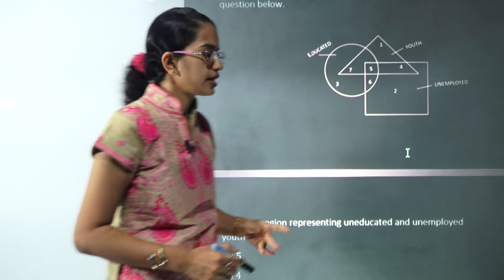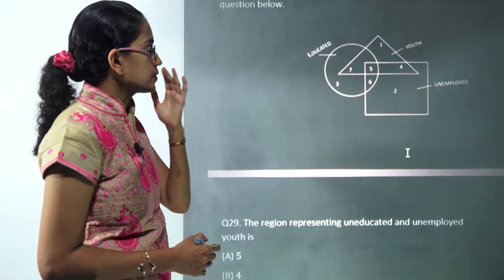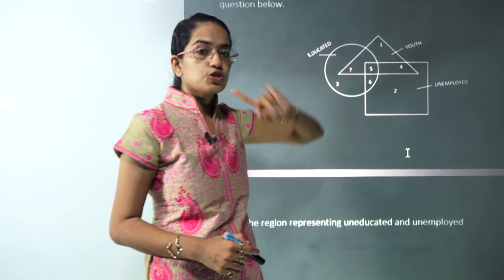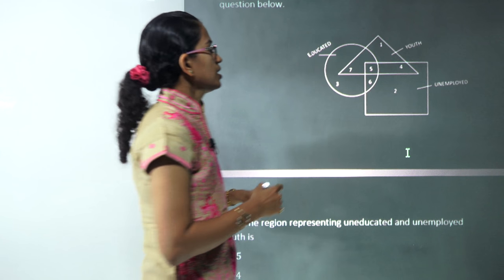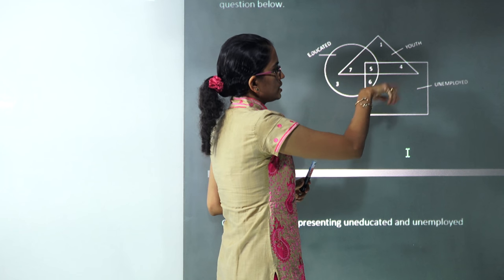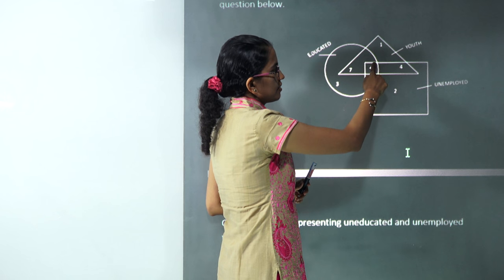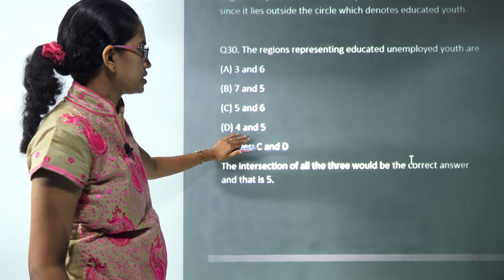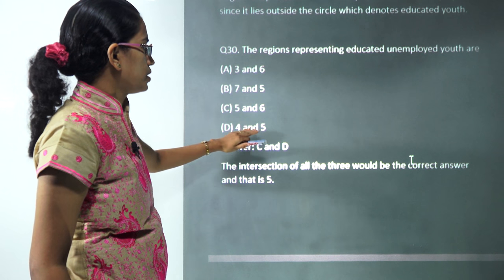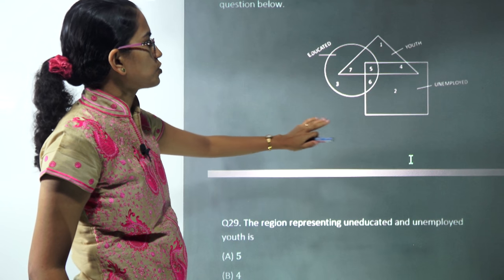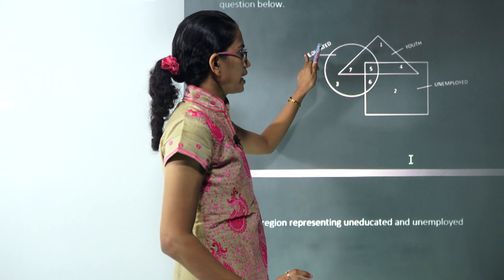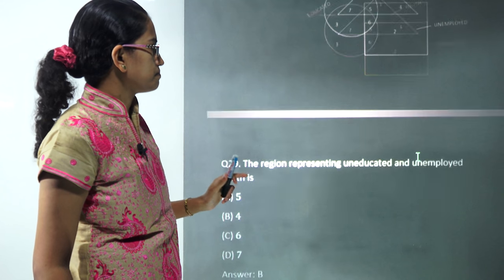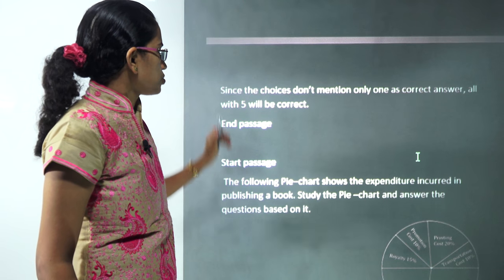The next question talks about educated employed, educated unemployed youth. When it is educated unemployed youth, the only region where all these three intersect is 5, so 5 would be the correct answer. However, the choices do not have that option, so the only option here would be 5. This question should be a kind of bonus question.